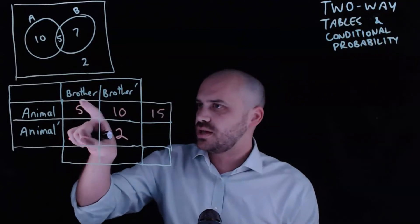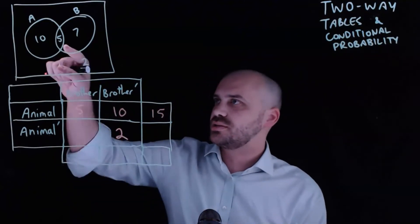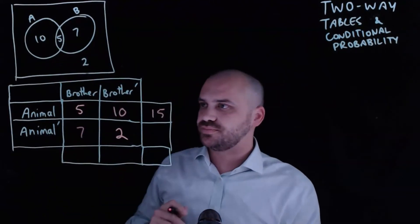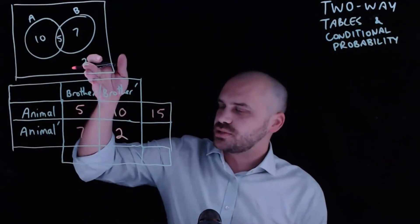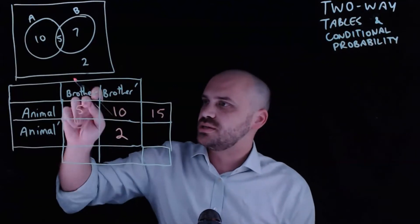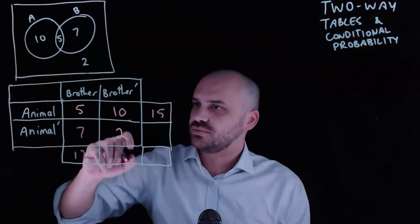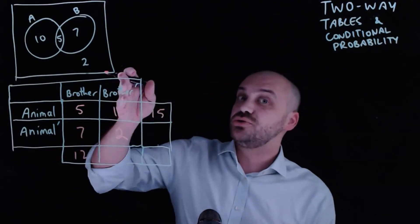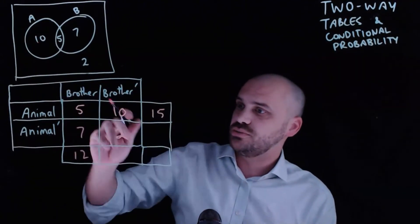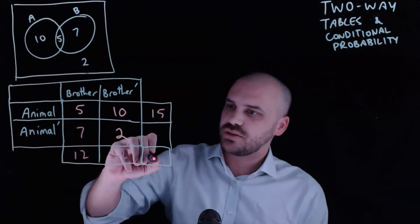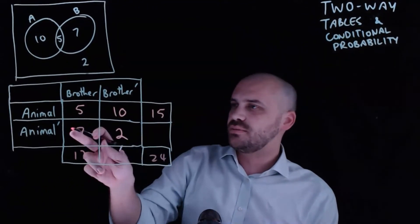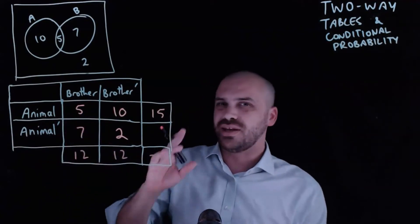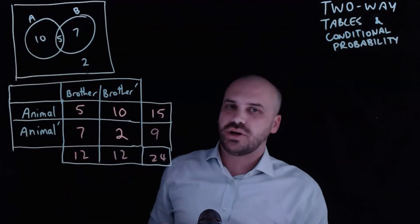A brother in their house but no animal in their house — that must be seven. That makes sense because the total number of people with brothers is seven plus five, which is twelve. The total number of people who do not have a brother is 10 plus two, which is also 12. Altogether we have 24, and the total number of people who do not have an animal in their house is seven plus two, nine.